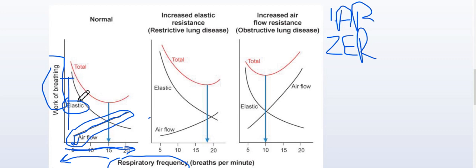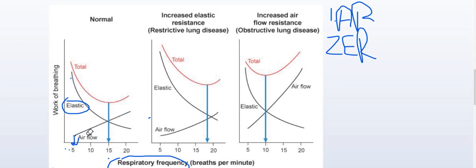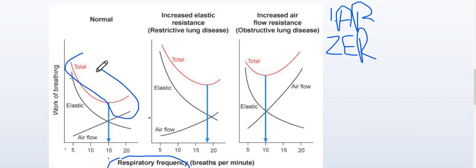If we look at the whole picture, this is the total work of breathing — the cumulative of the elastic resistance and the airflow resistance. The total work of breathing has a minimal value at some point. We have to find where the work of breathing is minimal.